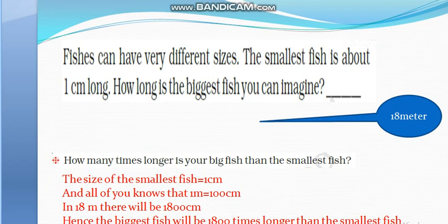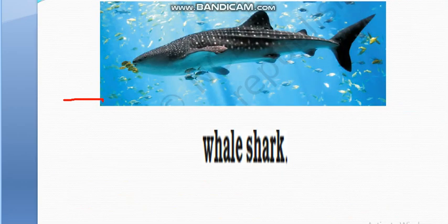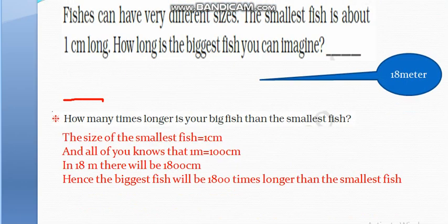The smallest fish is about 1 cm long. Here we have one question: how long is the biggest fish you can imagine? The biggest fish in the world is the whale shark, and it is 18 meters long. So the length of the smallest fish is 1 cm, and the length of the biggest fish is 18 meters.